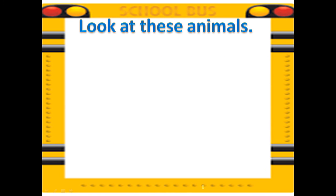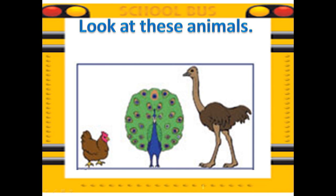Now, I want you to look at these animals. I will be introducing to you another term aside from the word tallest. Let's name these animals — they're all birds. This is a chicken. This is a peacock. And the last one is an ostrich. It's a very, very tall ostrich.